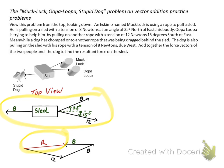So let's break these into components and do this again using the component method. For ease, I'm just going to call these vectors M, O, and D. Muck Luck, Oopa Loopa, and Dog.